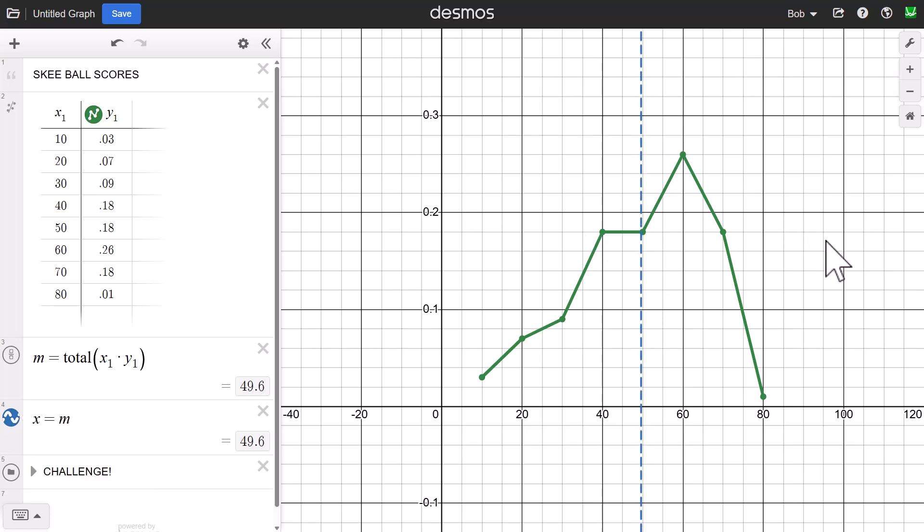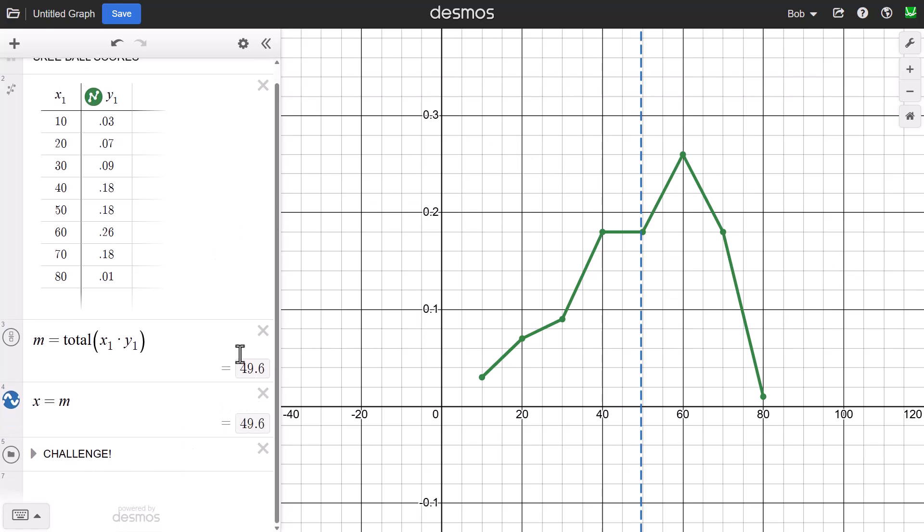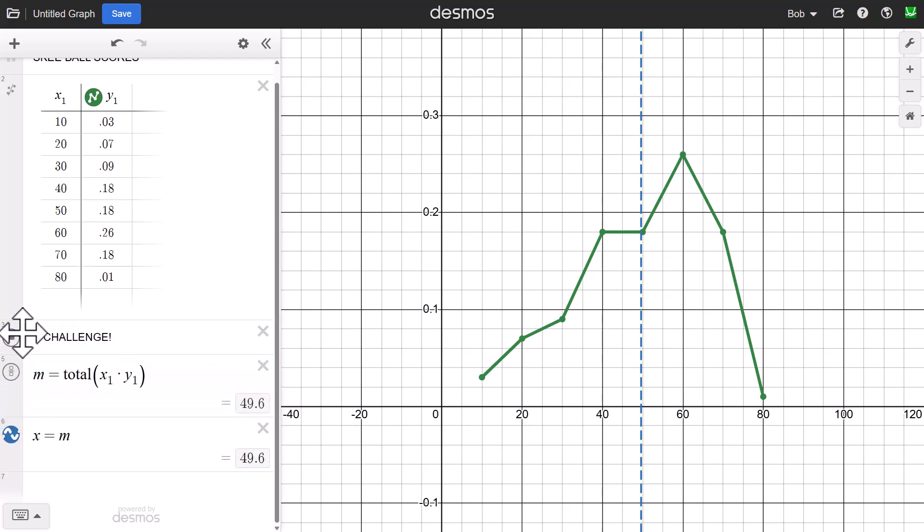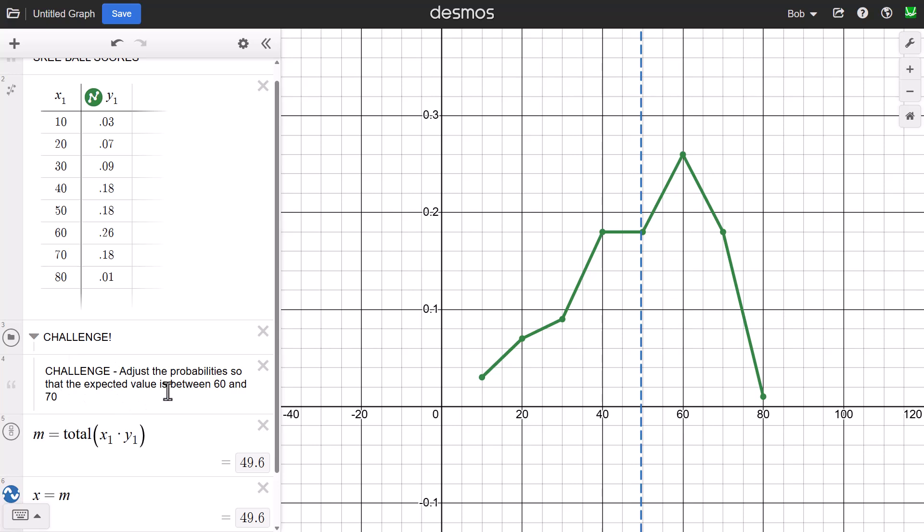So I can display the expected value here and get students to think about, well, notice it looks like this mean is pushed a little bit towards one side as opposed to the other. And why is that happening and have those conversations? And in fact, I might want to take this and give an additional challenge. So my challenge is, can we adjust the probability so the expected value is between 60 and 70? What would have to happen there?